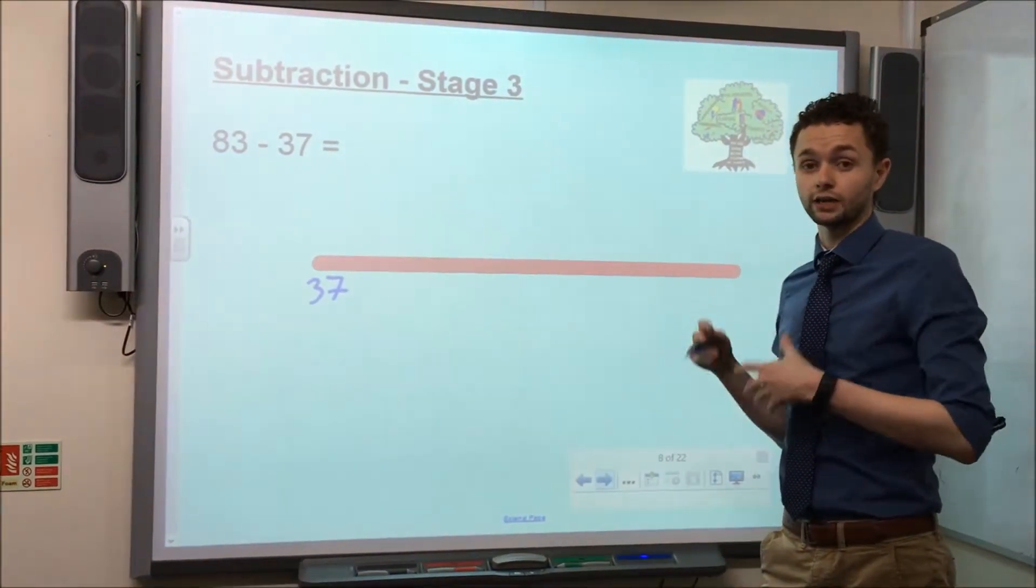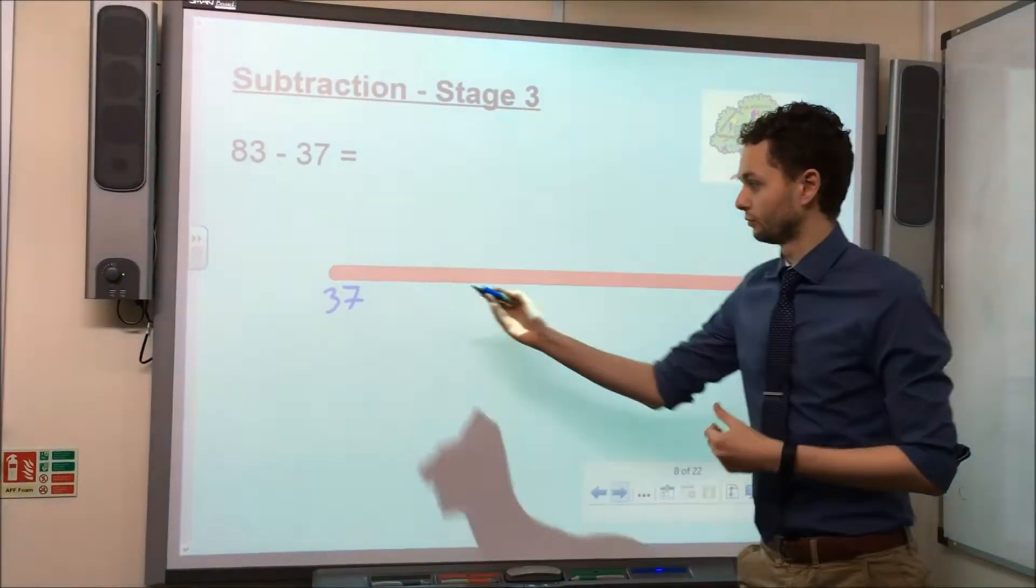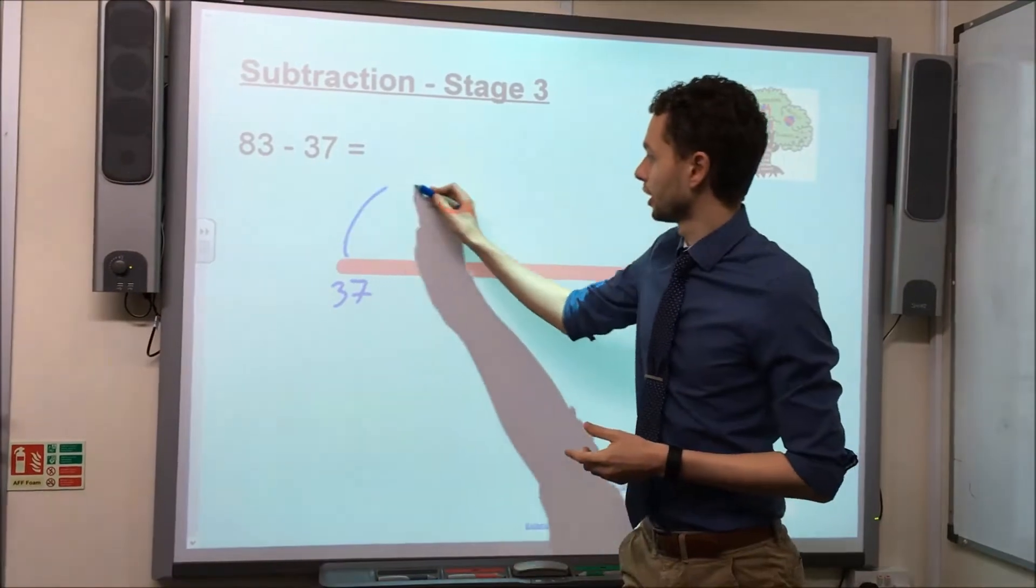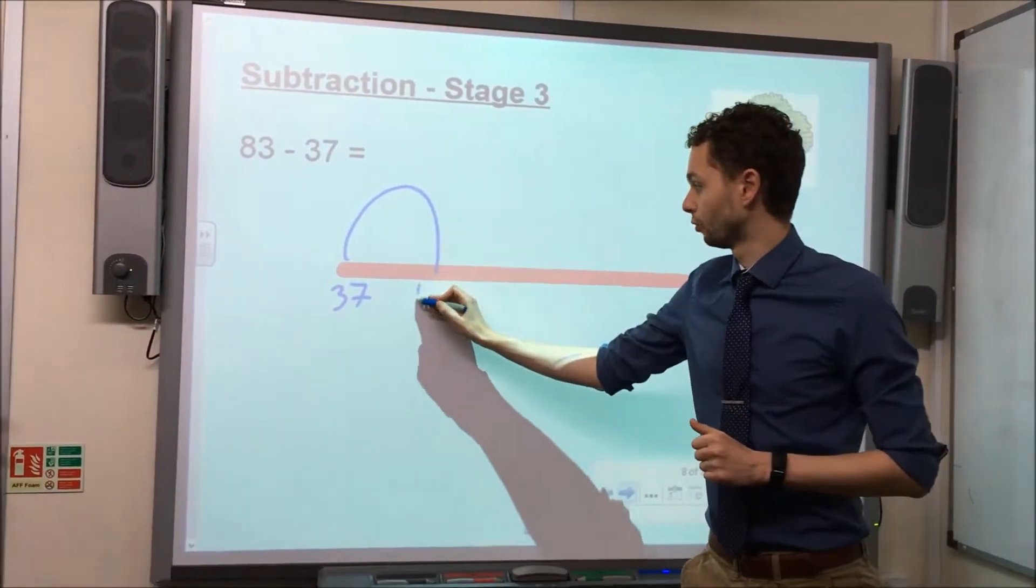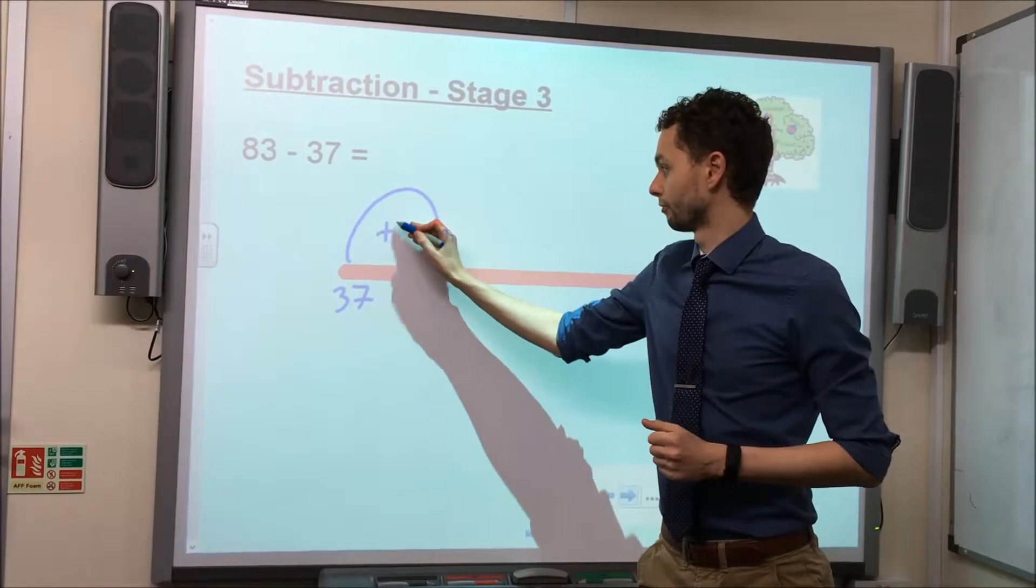We then encourage the children to take a jump to the next 10. So for 37, the nearest 10 is going to be 40, which would be a jump of 3.